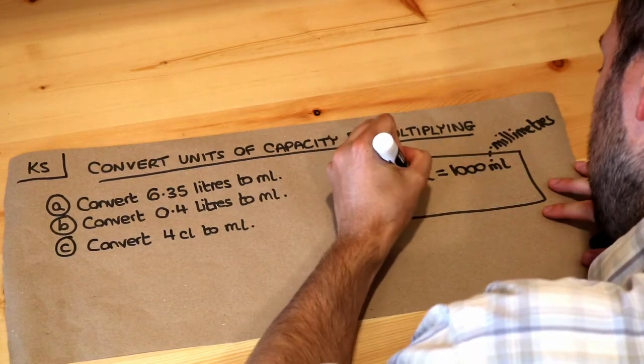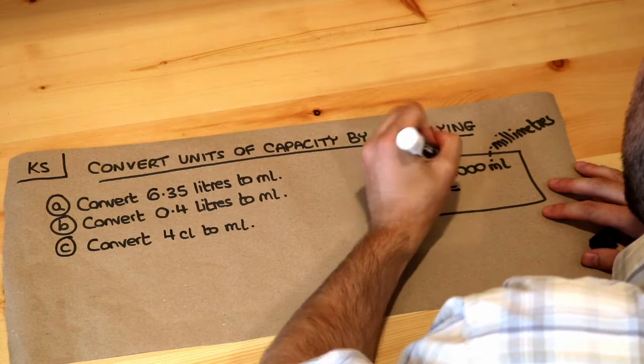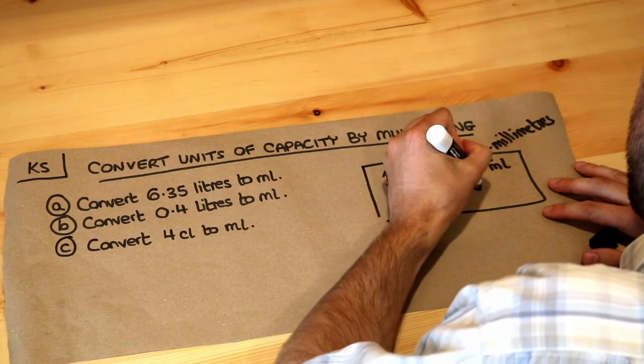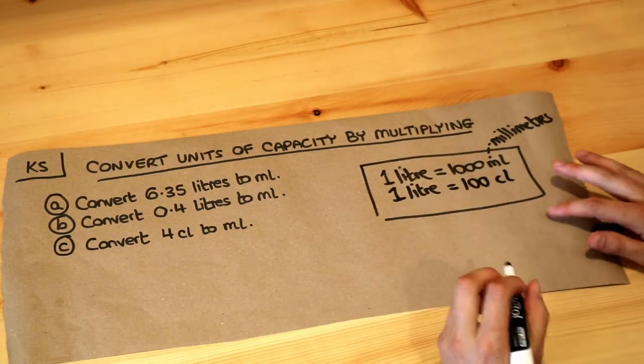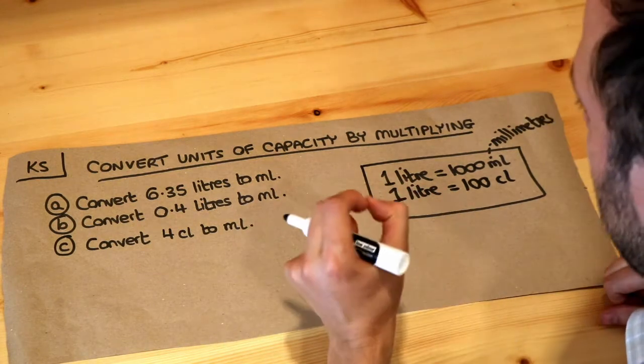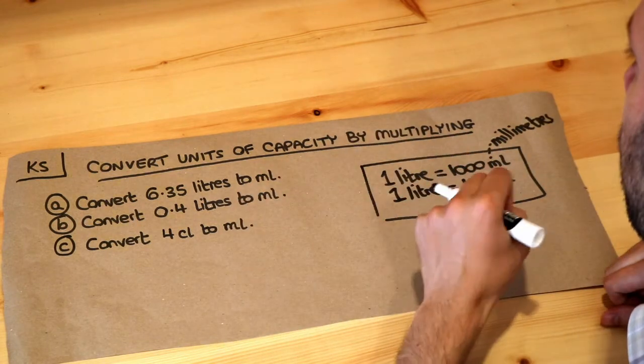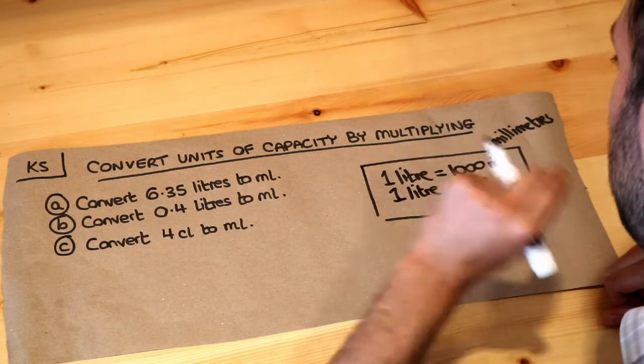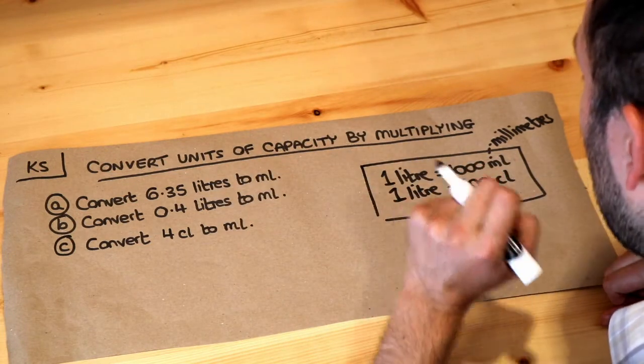And we've also got another unit. We've got that one liter is equal to a hundred centiliters. Now if you think about centimeters, one meter is a hundred centimeters, and one centimeter is a hundredth of a meter. So centi means a hundredth of.